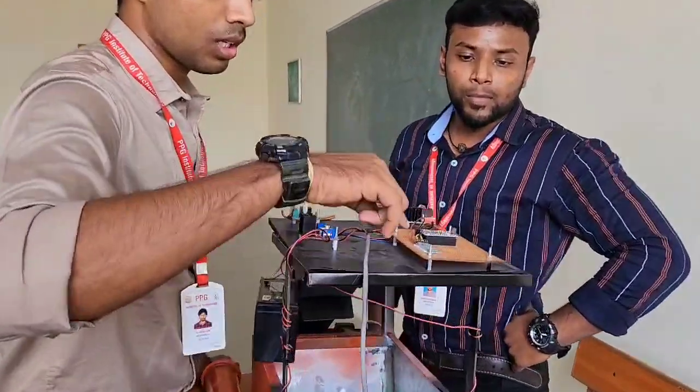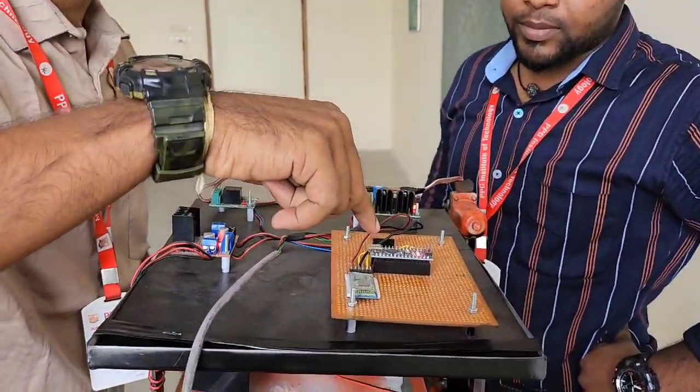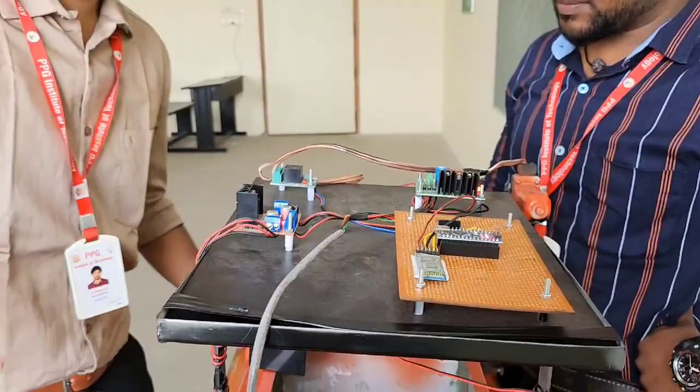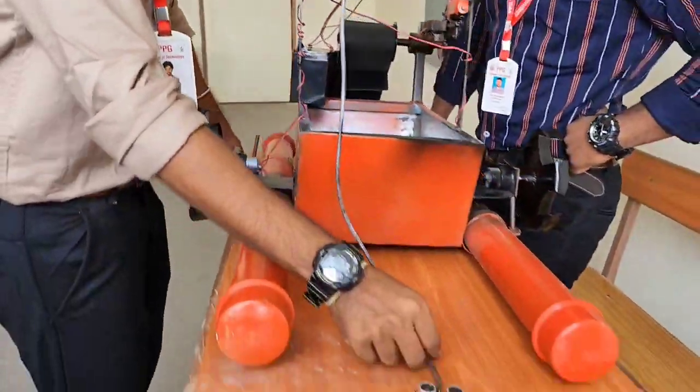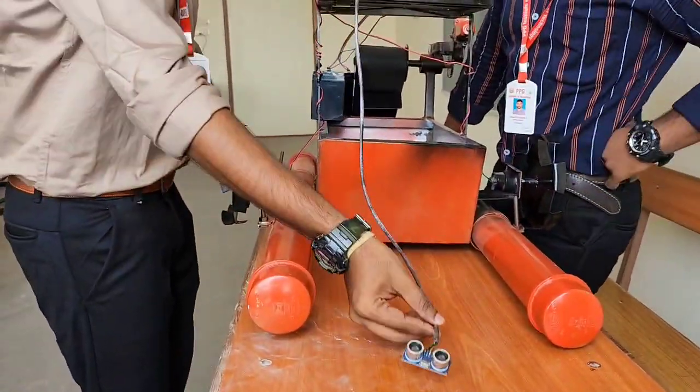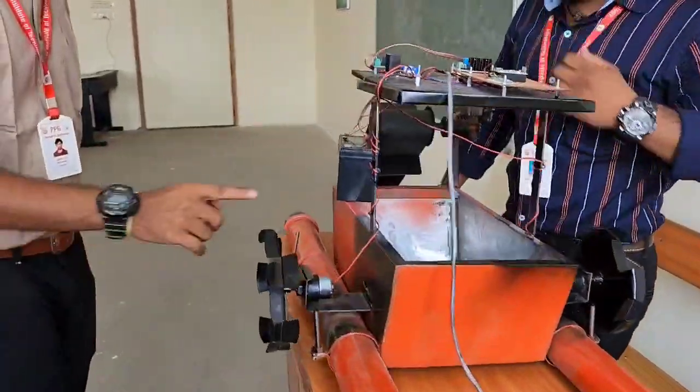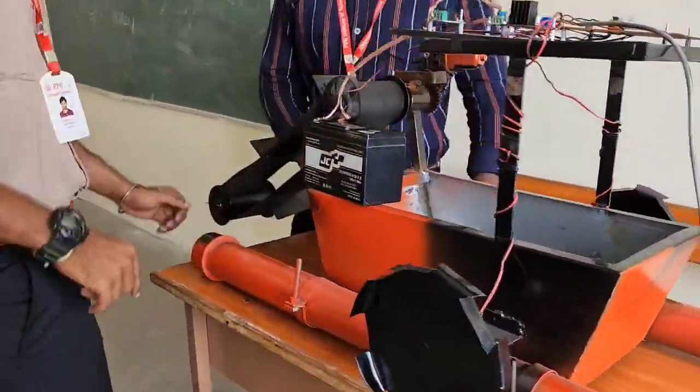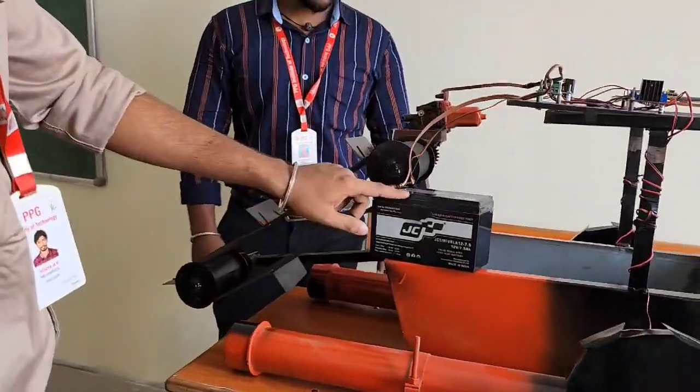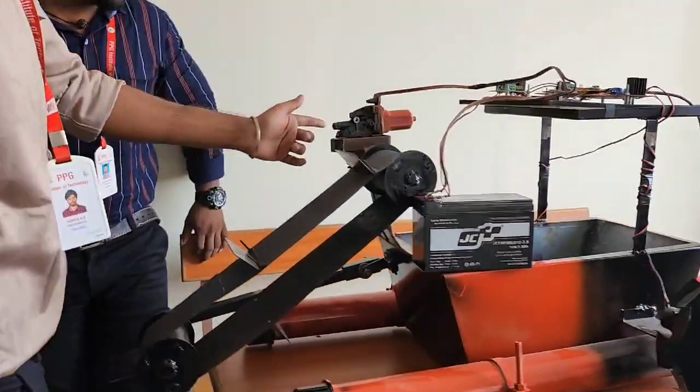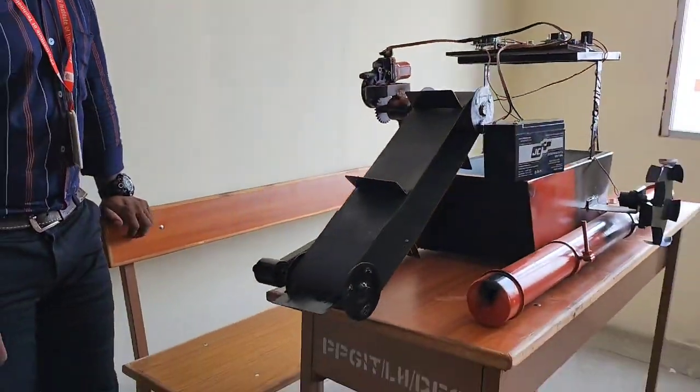First, we will see the important components. This is the Serial Bluetooth Terminal, and this is the Arduino Nano. These are all relays. The next main part is sensors - ultrasonic sensors. We have two turbos, relays, and one battery. We also use some bevel gears and spur gears.